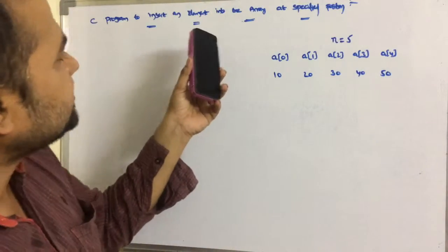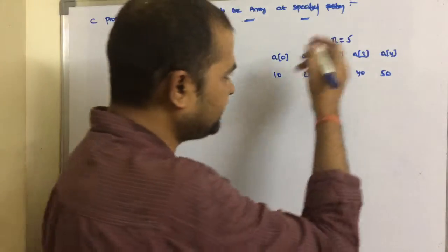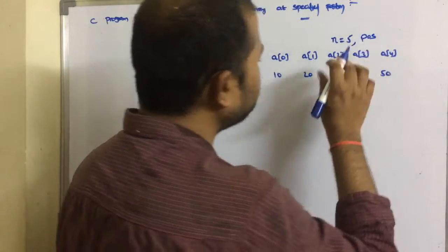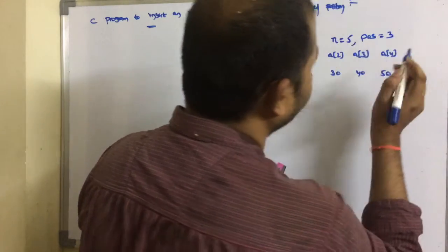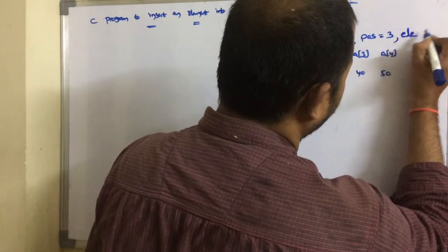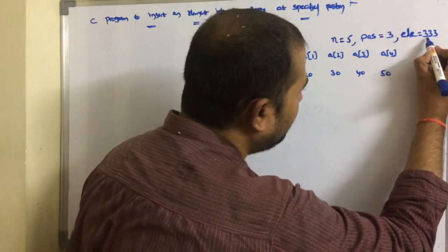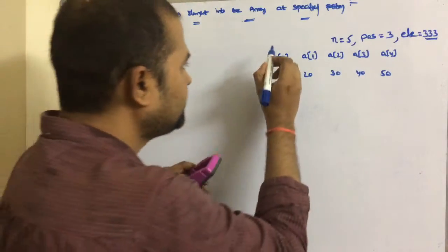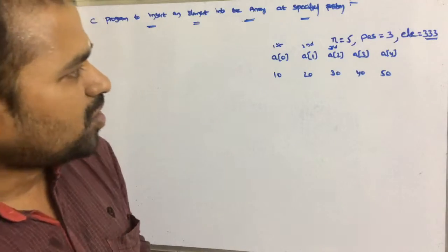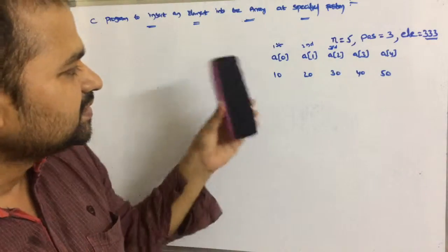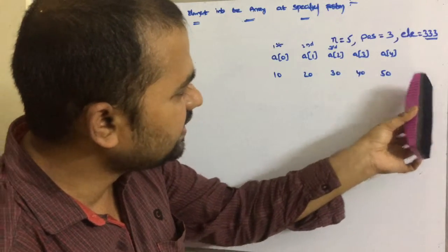We require two more variables: position and element. The position value is 3, and we have to insert the element 333 at the third position. So the first position is 10, second is 20, and third is 30. After inserting 333, the output will be 10, 20, 333, 30, 40, and 50.